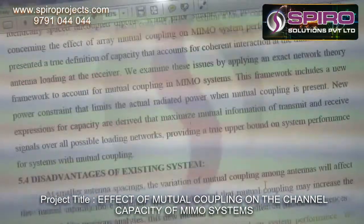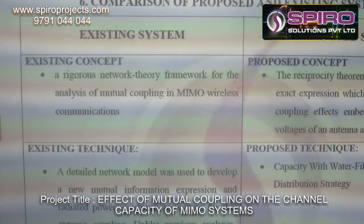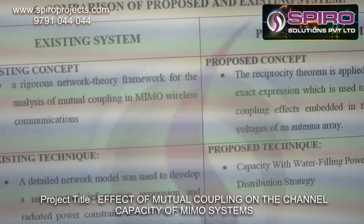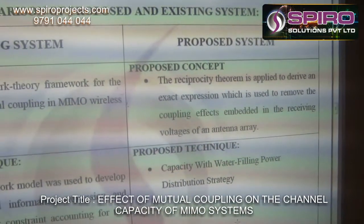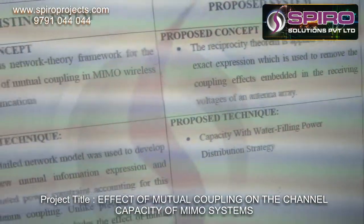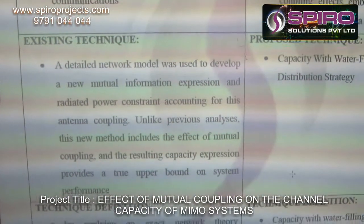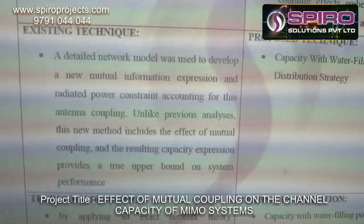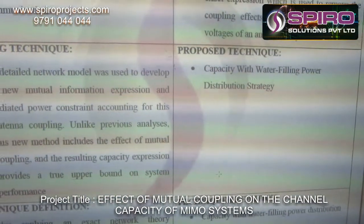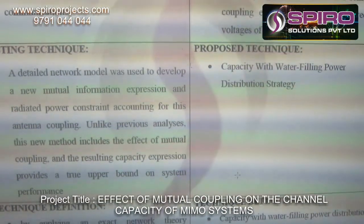This is the existing and proposed technique comparison. The existing concept is the rigorous network theorem for the analysis of mutual coupling in MIMO communication. The proposed concept is that the reciprocity theorem is applied to the receiving voltage of an antenna array. For the existing technique, a detailed network model was used to develop a new mutual information expression and radiated power constraints accounting for the antenna coupling. Unlike previous analysis, this new method includes the effect of mutual coupling and the resulting capacity expression provides a true upper bound on the performance.